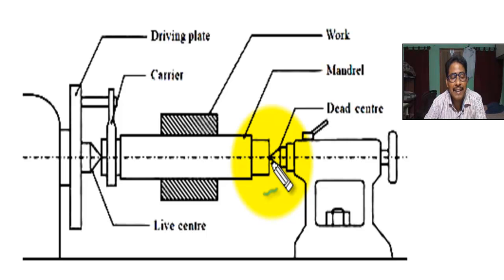Mandrel is used to hold hollow workpiece to machine their external surface. This is the work, the work revolves with mandrel, which is mounted between live center and dead center.